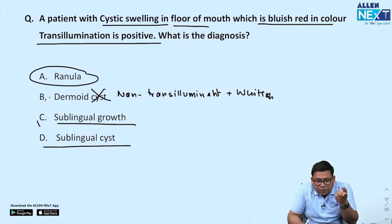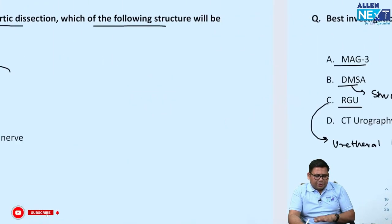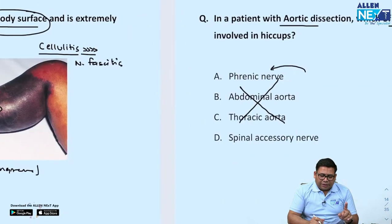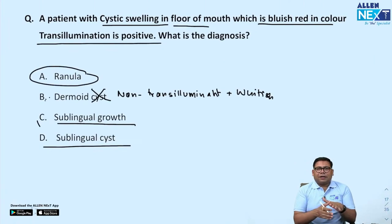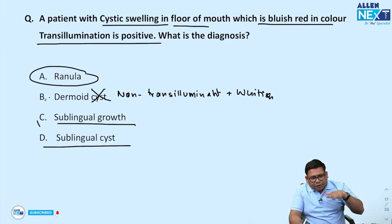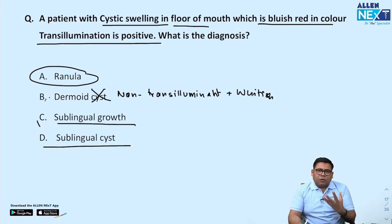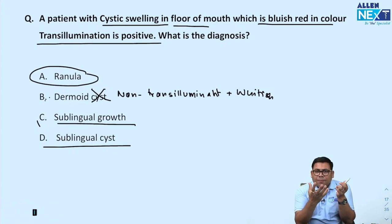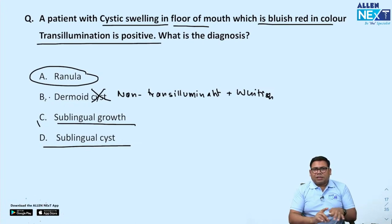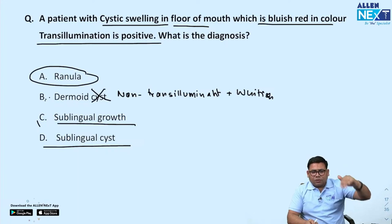For the cellulitis question, it was mentioned that the swelling goes beyond the red margin — so it is more of cellulitis than necrotizing fasciitis. They are interconnected. Cellulitis is a superficial presentation. Necrotizing fasciitis starts at a deeper layer — the tissues are boggy, not woody. The woody presentation with blisters means it is starting from the superficial part — that is cellulitis.